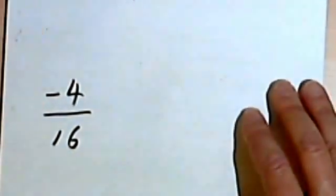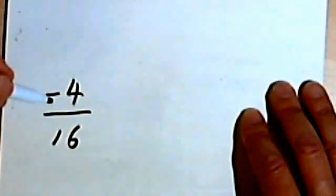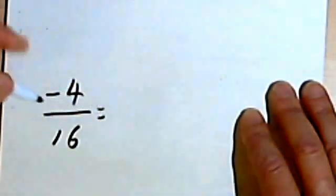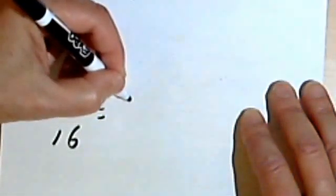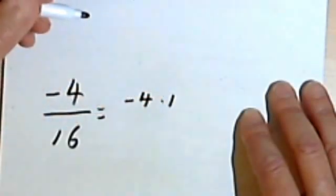Here's one more. I've got a negative 4 over 16. What I want you to see is that if a fraction is negative, after you reduce it, it's still going to stay negative. So I'm going to think of this as negative 4 times 1.